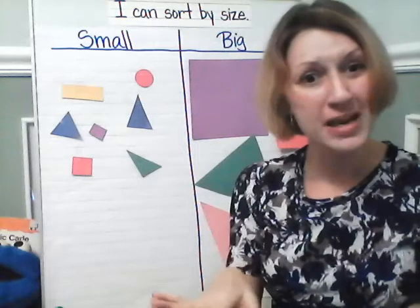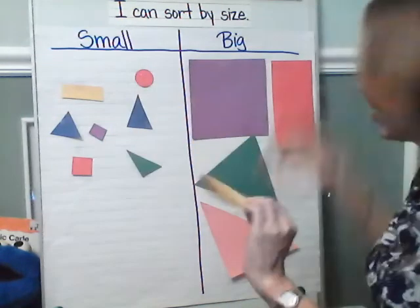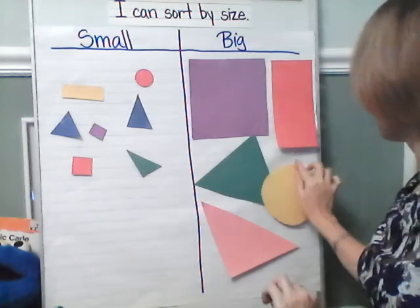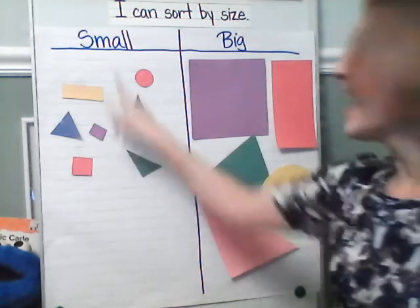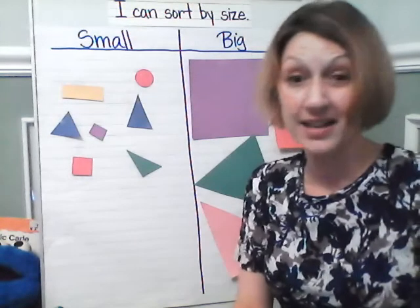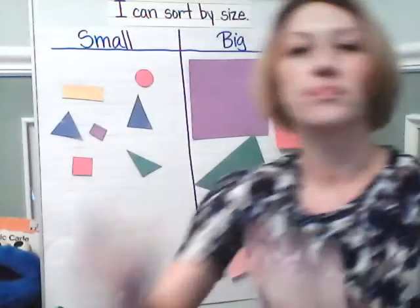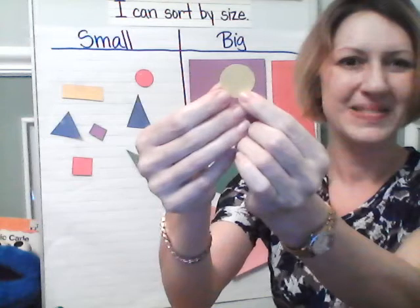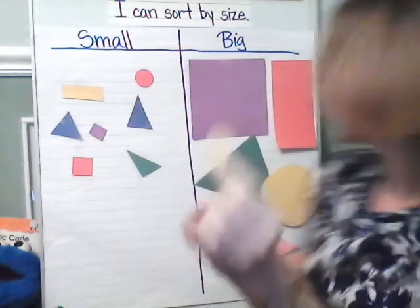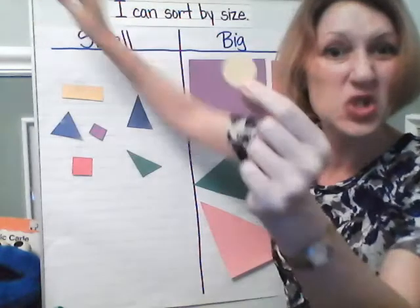We're almost finished. Can you help me? Look at this circle, big or small? It does look big to me, too. I'm going to add it over here to big. Remember, this side has the big shapes and this side has the small shapes, and we're sorting by size. We've got a couple more. What about this circle here? Do you think it's small or do you think it's big? I think it's small, too. It's such a little circle, especially compared to this big yellow circle there. So this circle is small.